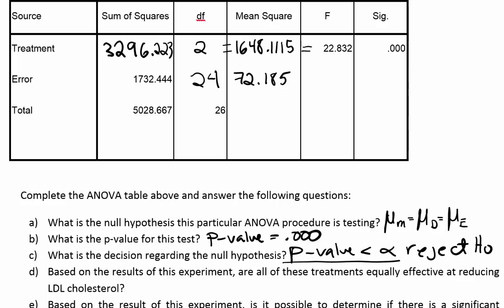Part D asks: based on the results, are all treatments equally effective at reducing LDL cholesterol? Since we rejected the null hypothesis, we don't believe it's true that all treatment means are equal. Therefore, it is not true that all the treatments are equally effective — because the null hypothesis stating they were equally effective was rejected.